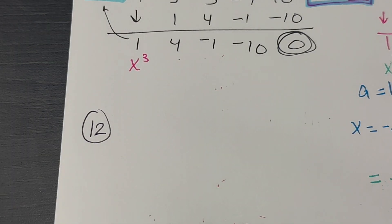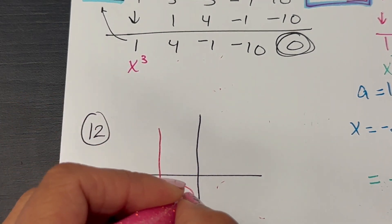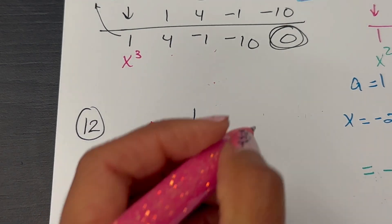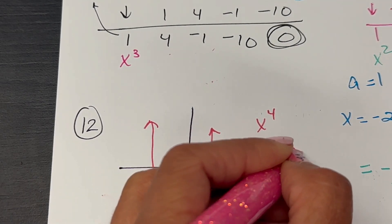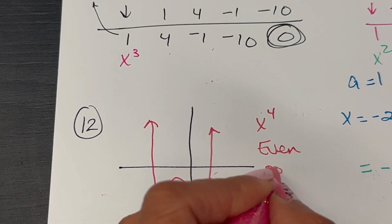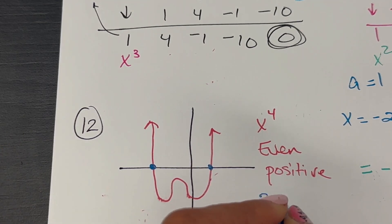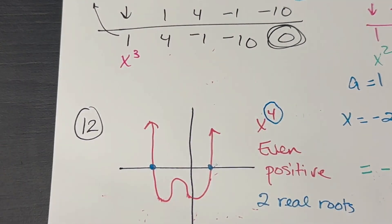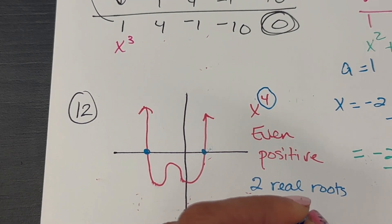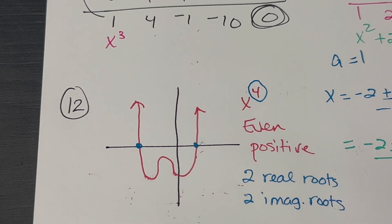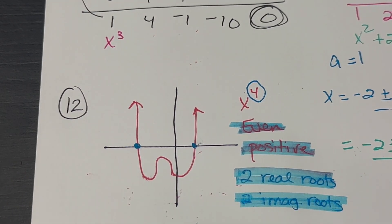Number 12. We've got an even degree function — I'll draw a picture of the graph, the funky W. It's an X to the fourth because it's like a parabola but definitely not a parabola. Both ends are facing up, so it has a positive leading coefficient. It's crossing the X axis in two spots, giving two real roots. Since it's degree 4 it has four roots total, so the other two are imaginary — imaginary roots always come in pairs. From the drop-downs: even degree, positive leading coefficient, two real roots, two imaginary roots.